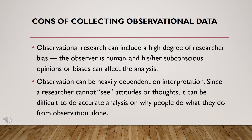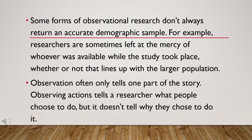Here are the cons of collecting observational data. Observational research can include a high degree of researcher bias, as the observer is human and their subconscious opinions can affect the analysis. Observation can be heavily dependent on interpretation since the researcher cannot see attitudes or thoughts, making it difficult to do accurate analysis on why people do what they do. Some forms of observational research don't always return an accurate demographic sample — researchers are sometimes limited to whoever was available during the study, which may not align with the larger population. Lastly, observation often only tells one part of the story: it tells what people choose to do, but not why they choose to do it.